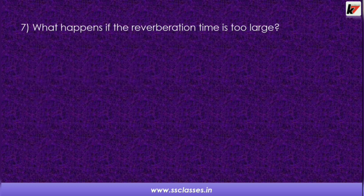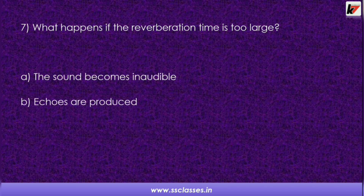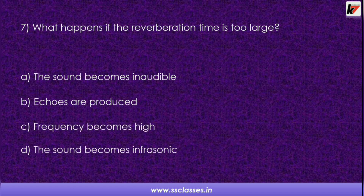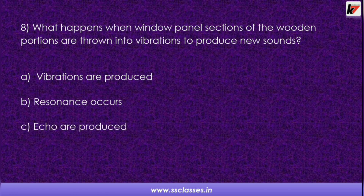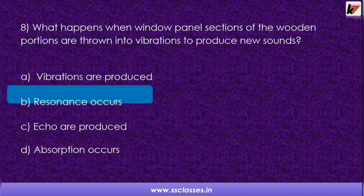Question 7: What happens if the reverberation time is too large? Options are: the sound becomes inaudible, echoes are produced, frequency becomes high, or the sound becomes infrasonic. The correct answer is echoes are produced. Question 8: What happens when window panels or wooden portions are thrown into vibrations to produce new sounds? Options are: vibrations are produced, resonance occurs, echoes are produced, or absorption occurs. The answer is resonance occurs.